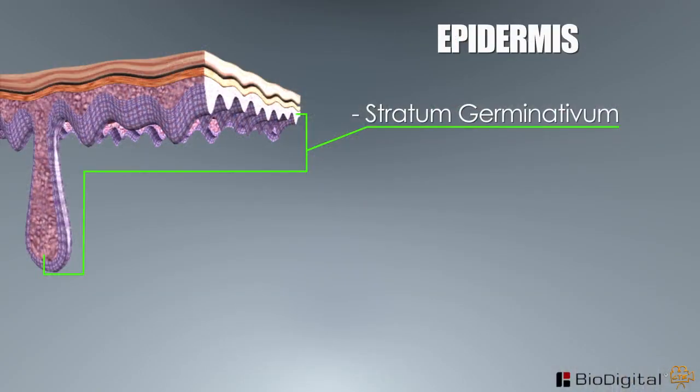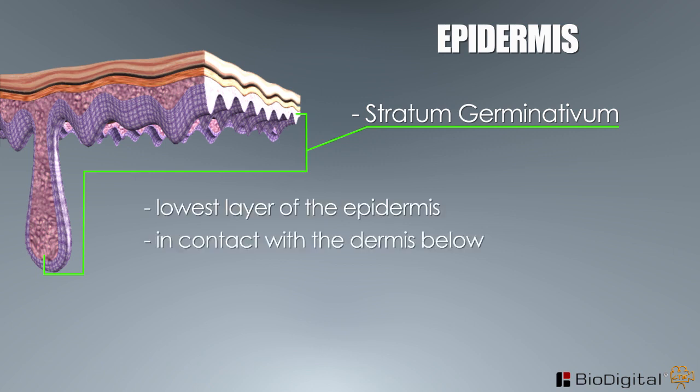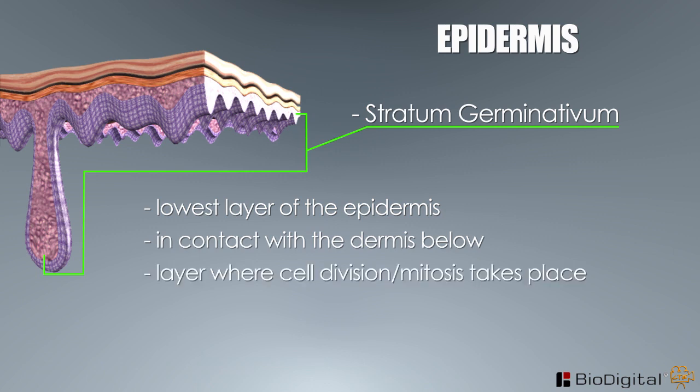The stratum germinativum is the lowest layer of the epidermis and is in contact with the dermis below. It is the layer in which cell division called mitosis takes place, and where new epidermal tissue is formed and begins to migrate to the surface of the skin, replacing the dead skin cells found in the stratum corneum.